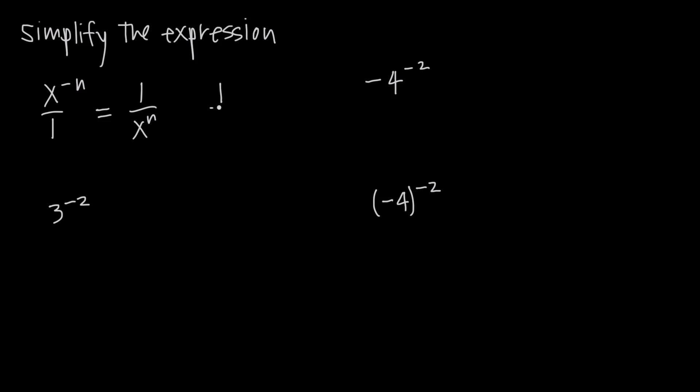If instead we had started with 1 over x to the negative n, our x to the negative n is in the denominator as opposed to starting with it in the numerator. We can do the same thing. We can just move it to the numerator from the denominator and this becomes x to the positive n. So when we move it from the denominator to the numerator, the sign flips.